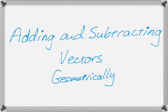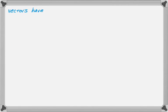In this video we're going to talk about adding and subtracting vectors geometrically. There are a couple things you have to know about vectors to be able to do this. The first thing is that vectors have what's called a magnitude, which when you're looking at them geometrically is just the length of the vector.